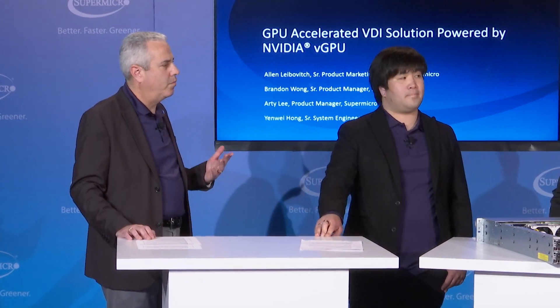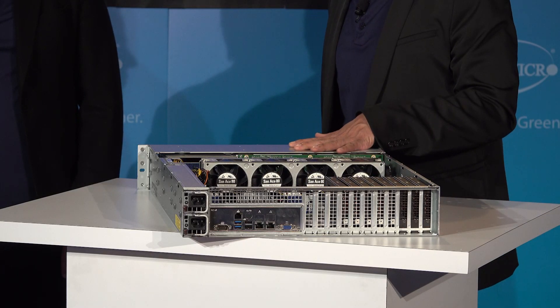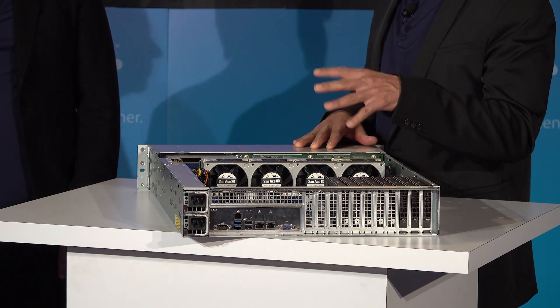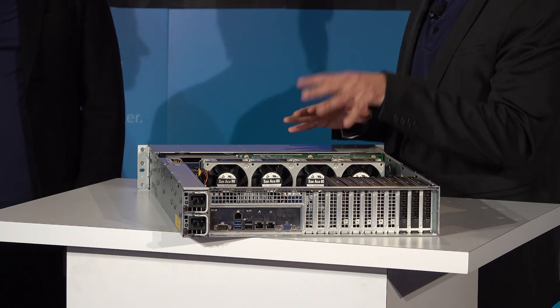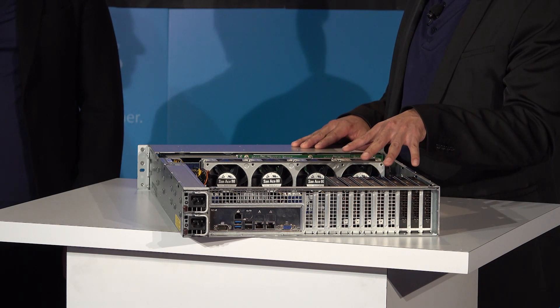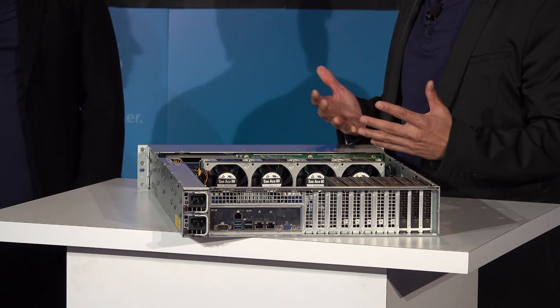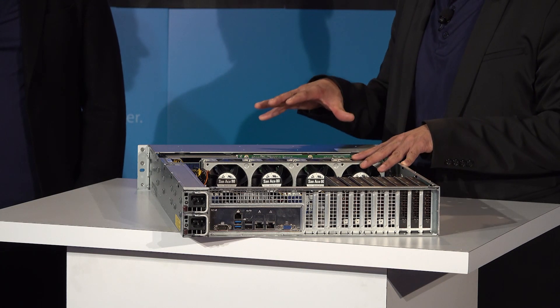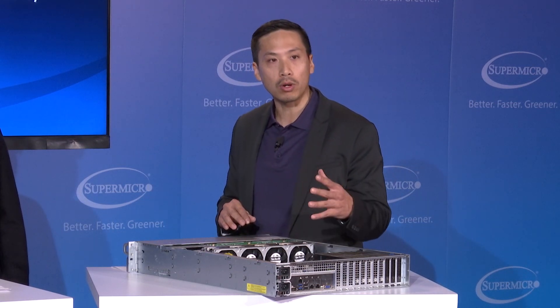Brandon, can you tell us about the Supermicro systems that are running VGPU? We have a couple of very exciting 2U offerings. Starting with the 2U MaxIO 2029P-TXRT server — this is a dual processor server with 16 memory slots, supporting up to 4 terabytes of memory, and featuring 11 PCI expansion slots. It's a great scale-up VGPU solution capable of supporting up to 10 NVIDIA T4 GPUs. We also have our 2U Ultra 2029U and 6029U servers, also dual processor, with 24 memory slots supporting up to 6 terabytes of memory, and supporting up to 4 Quadro RTX 6000 GPUs, making for a very great Quadro VDWS solution for graphic-intensive workloads.